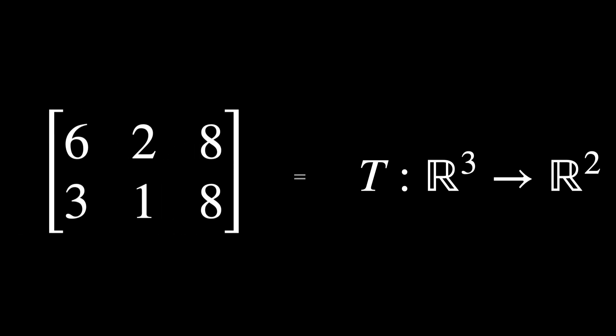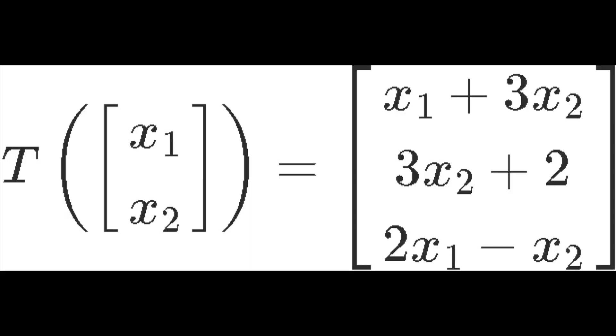But instead of mapping scalars to scalars, we are mapping vectors to vectors. That is all a matrix is. It is just a linear transformation to a vector.